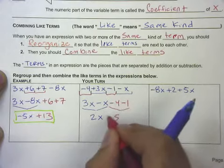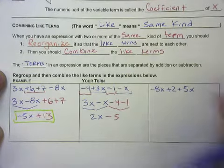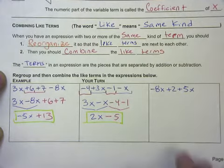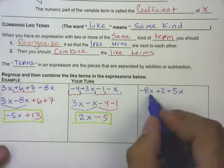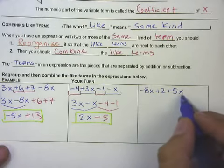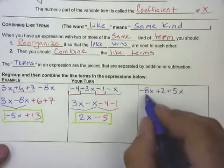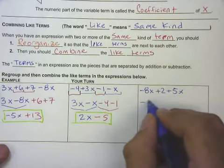On this next one, we've got negative 8x plus 2 plus 5x. So negative 8x plus 5x—we can combine those two things. So we'll reorganize that: negative 8x and the positive 5x.